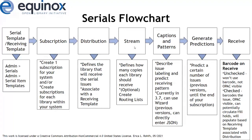Once you create your subscription, distribution, and stream, you can create the captions and patterns first. Then once you create your subscriptions and distribution streams, you can generate your predictions associated with the captions and patterns. It is important to make sure that you set up your serials template first, because if you go straight into a bibliographic record, start managing your subscriptions, create a subscription, and don't associate the subscription with a serial template — by the time you get to receive and plan on receiving an issuance with a barcode, it's not going to allow you, because you don't have an associated serial template.